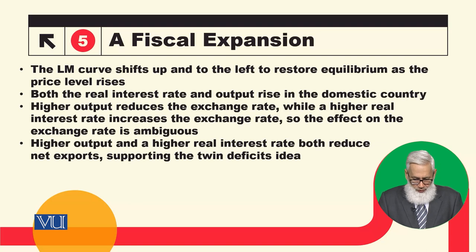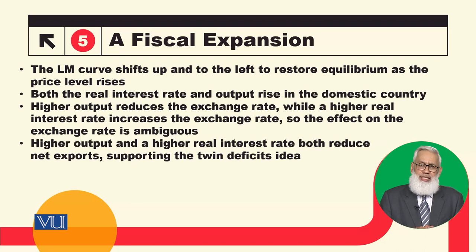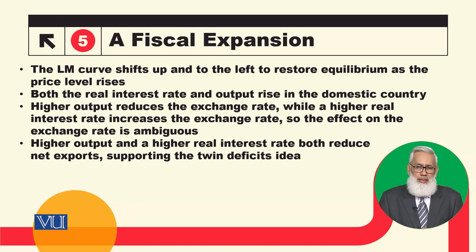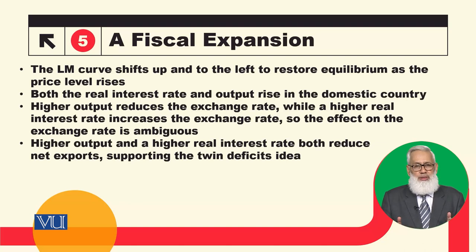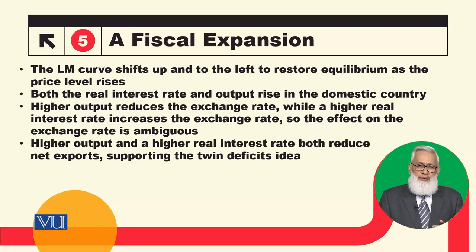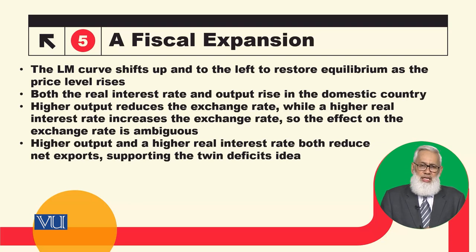Both higher output and higher real interest rate reduce net exports — higher output raises imports, and higher interest rates further reduce net exports. The effect on net exports is therefore clear and unambiguous. This supports the twin deficit hypothesis: when the fiscal deficit increases, the current account deficit also increases.